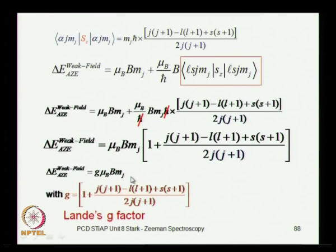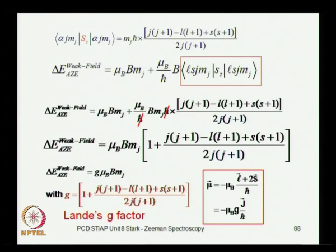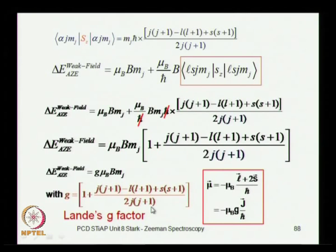This is the effective g coming from the combination, and it is neither equal to 2 nor equal to 1 — it depends on the values of J and L. S is always one-half for an electron, so it is (1/2)(3/2). This factor is called the Landé g-factor, and it governs the energy splitting between the perturbed levels as a result of the applied magnetic field treated perturbatively. The choice of basis — J, MJ quantum numbers — is the critical factor here.